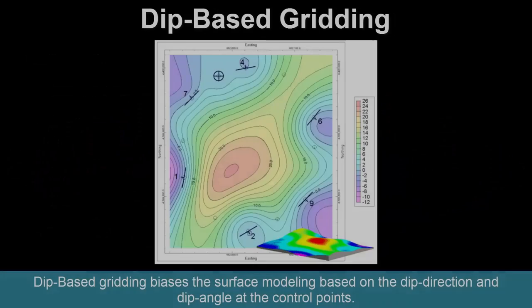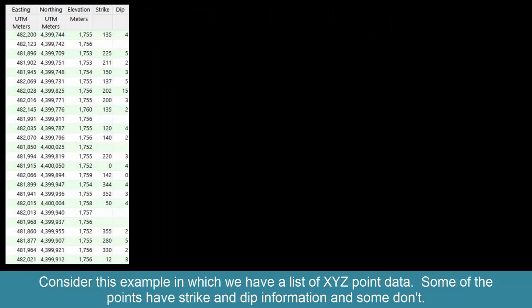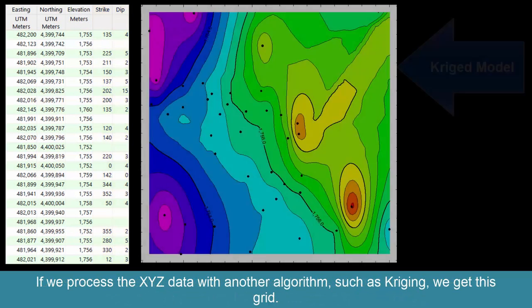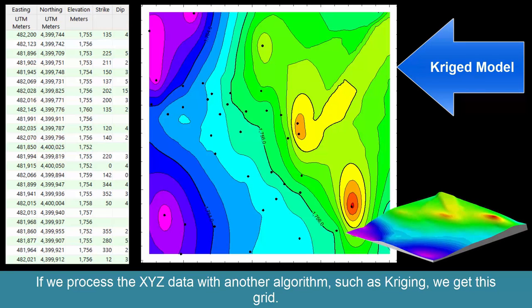Dip-based gridding biases the surface modeling based on the dip direction and dip angle at the control points. Consider this example in which we have a list of XYZ point data. Some of the points have strike and dip information and some don't. If we process the XYZ data with another algorithm such as kriging, we get this grid.